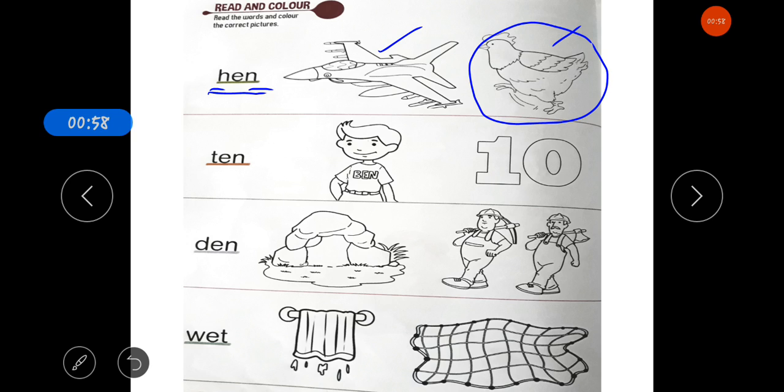Like this. This is T-E-N, ten. You have to color ten. D-E-N, den. You have to color den. Which picture is of den? Yes, this is the picture of den.